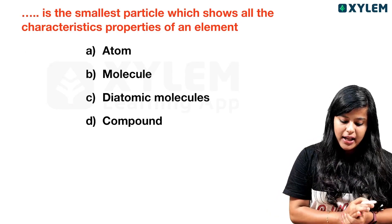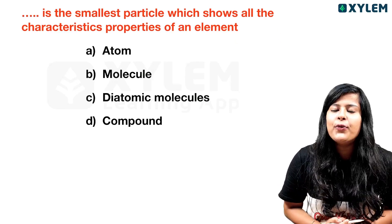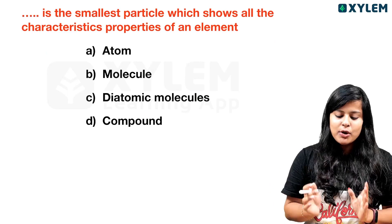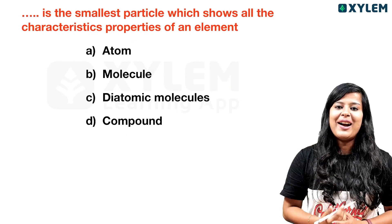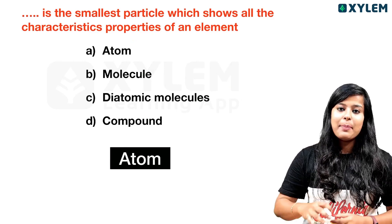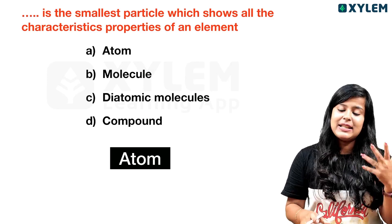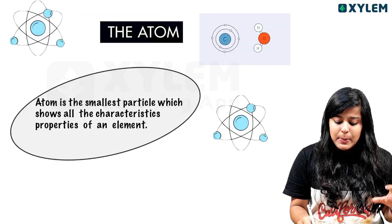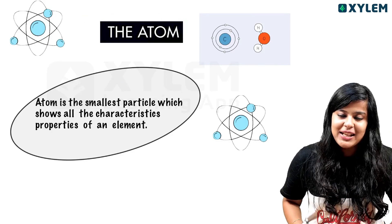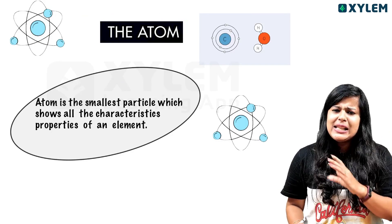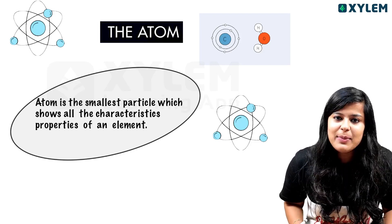The next question: what is the smallest particle which shows all the characteristic properties of an element? Options: atom, molecule, diatomic molecule, or compound. The answer is atom. An atom is the smallest particle which shows all the characteristic properties of an element.